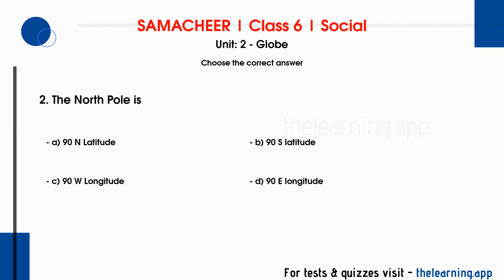Question 2: The North Pole is. Options are A. 90N Latitude, B. 90S Latitude, C. 90W Longitude, D. 90E Longitude. Correct answer is A. 90N Latitude.